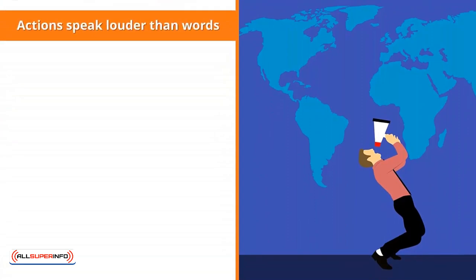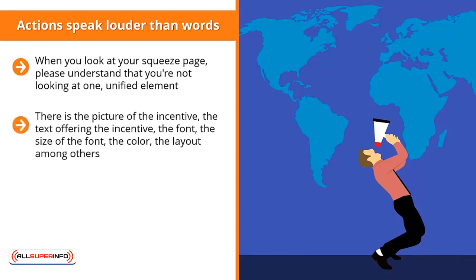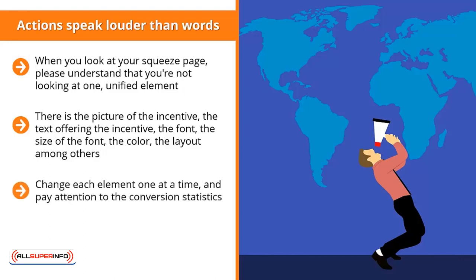When you look at your squeeze page, understand that you're not looking at one unified element. The squeeze page is actually made up of many different parts: there is the picture of the incentive, the text offering the incentive, the font, the size of the font, the color, the layout, among others. Change each element one at a time and pay attention to the conversion statistics.